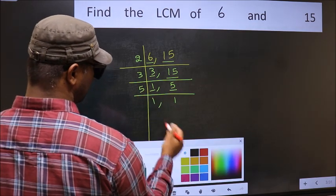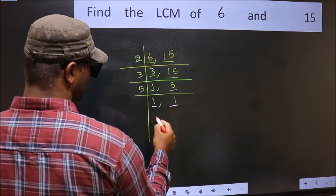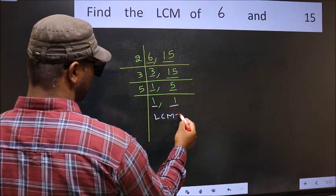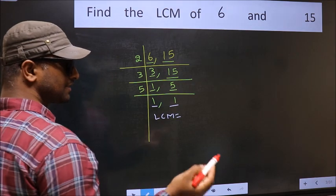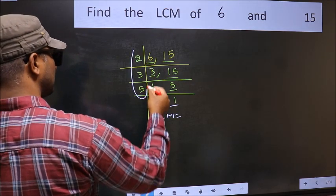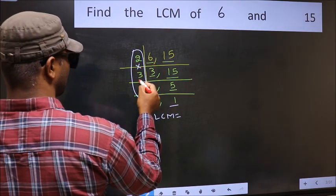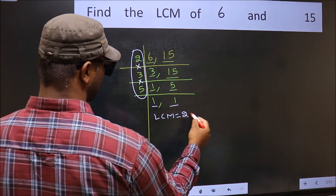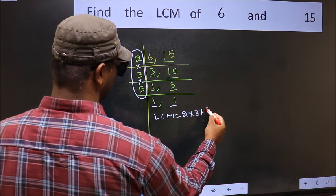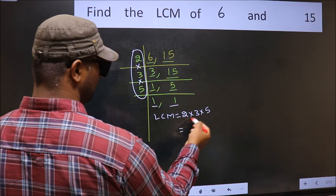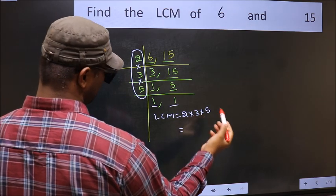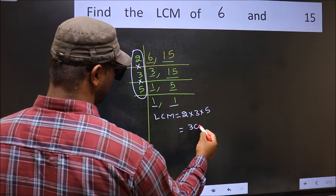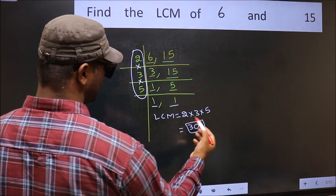So we got 1 in both places so our LCM is the product of these numbers that is 2 into 3 into 5. When we multiply these numbers, we get 30 is our LCM.